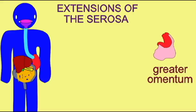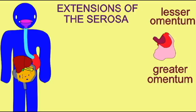The lesser omentum suspends the stomach and the duodenum from the liver. It arises from the lesser curvature of the stomach.